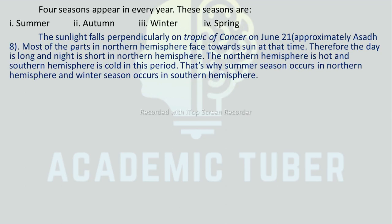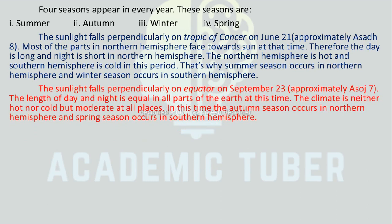Four seasons appear every year: summer, autumn, winter, and spring. The sunlight falls perpendicularly on the Tropic of Cancer on approximately June 21. Most parts of the Northern Hemisphere face the Sun at that time, so the day is long and night is short in the Northern Hemisphere. The Northern Hemisphere is hot and the Southern Hemisphere is cold in this period — that is why summer season occurs in the Northern Hemisphere and winter season in the Southern Hemisphere. The sunlight falls perpendicularly on the equator on approximately September 23, and the length of day and night is equal in all parts of the Earth. The climate is neither hot nor cold but moderate. Autumn season occurs in the Northern Hemisphere and spring season in the Southern Hemisphere.